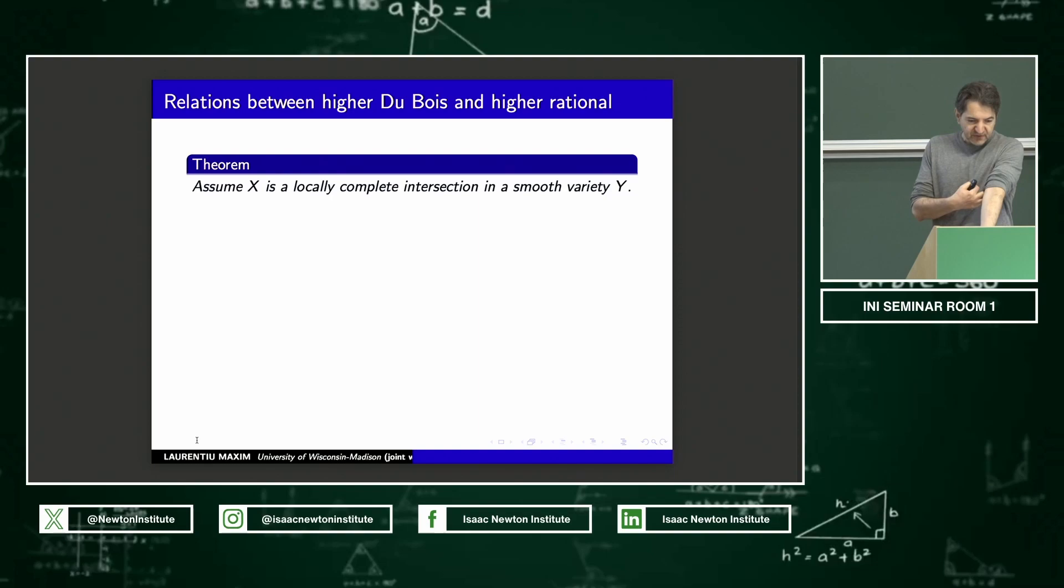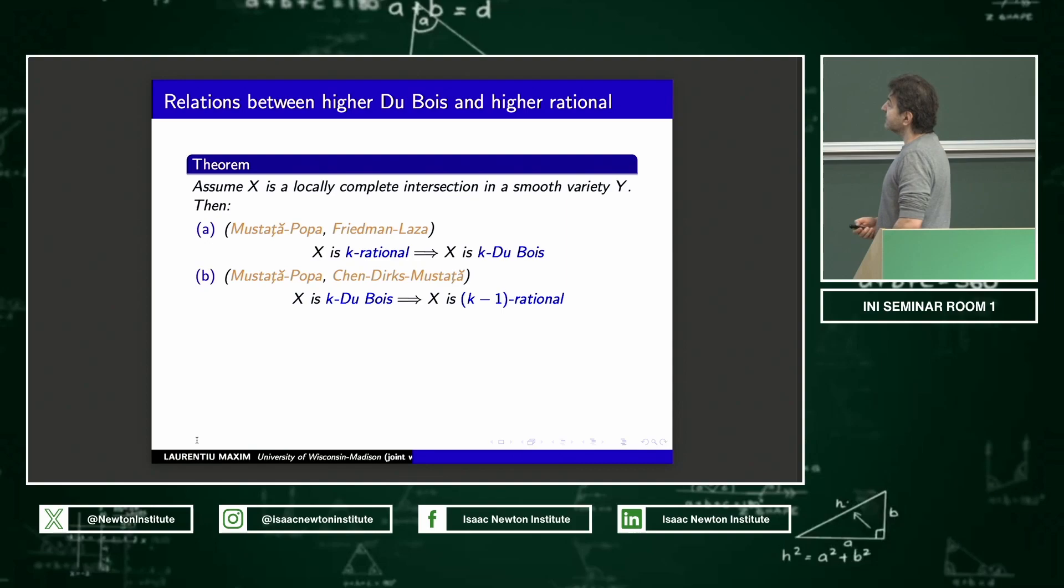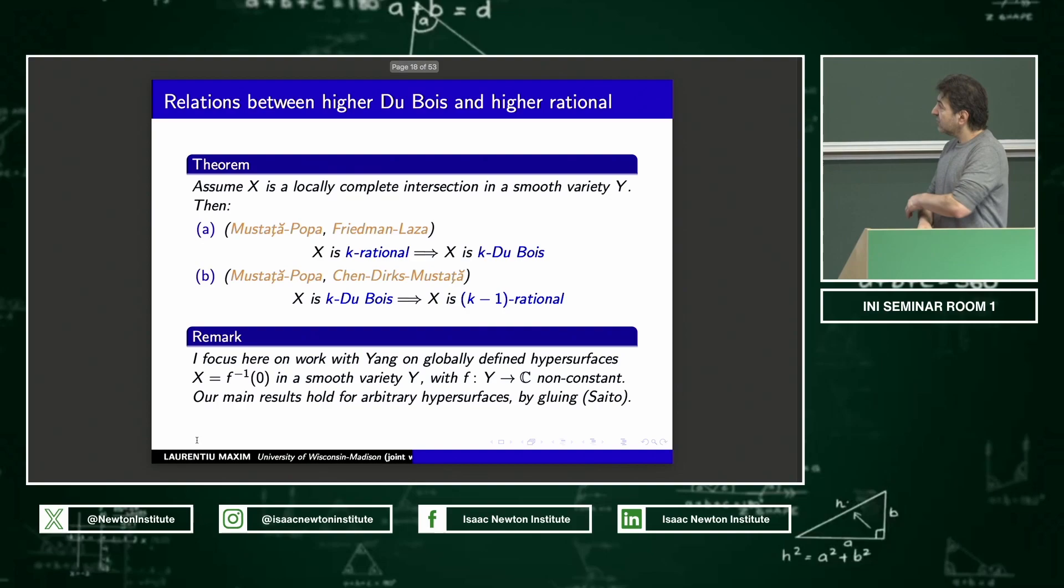I'm not going to put all these results here, but I'm saying them because the subject is quite broad already. So what's the relation between higher Du Bois and higher rational? This is best understood in the case of locally complete intersection. In fact, there are still many open questions aside away from this case. So let's assume I have a local complete intersection in a smooth variety. And then results of Mustață, Popa and Friedman-Laza say that just like in the case of rational implies Du Bois, K rational implies K Du Bois. But in this case, you can do more: K Du Bois also implies K minus one rational. There are lots of works about this initially done in the case of hypersurfaces, then more recently done in the case of local complete intersection.